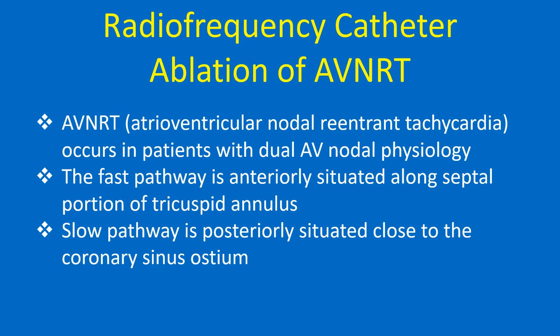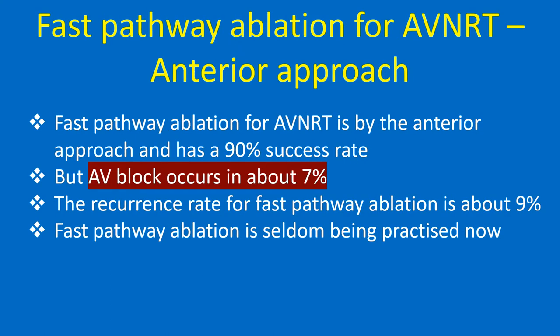The slow pathway is posteriorly situated close to the coronary sinus ostium. Fast pathway ablation for AVNRT is by the anterior approach and has a 90% success rate. However, AV block occurs in about 7% and the recurrence rate is about 9%. Fast pathway ablation is seldom practiced now.